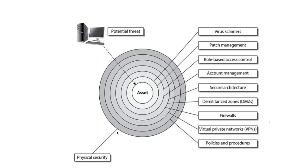You can outsource physical security to another security company. So that's how this multi-layered protection of an asset works — think of it like an onion. Bad actors can peel off the onion one layer at a time, which is why every layer must be protected.